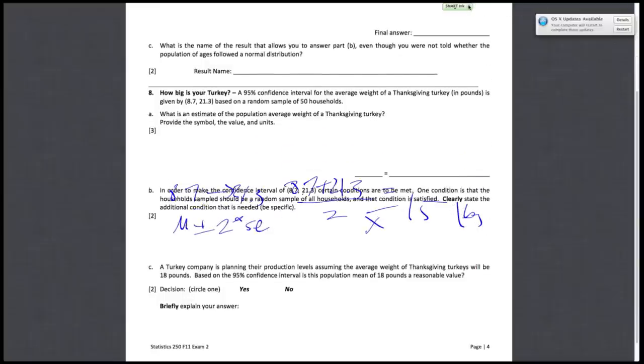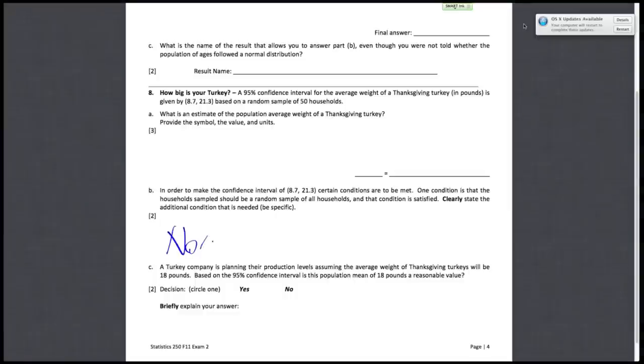Moving on to 8B. In order to make the confidence interval of 8.7 to 21.3, certain conditions have to be met. One condition is that the household sample should be a random sample of all households, and that condition is satisfied. Clearly state the additional condition needed. This is just something you have to know. You need to be aware of all the conditions that need to be satisfied in order to do inference. The random condition has already been specified. The additional condition would just be normality. The population of all the turkey weights needs to follow a normal distribution. We just need normality of the population of turkey weights.